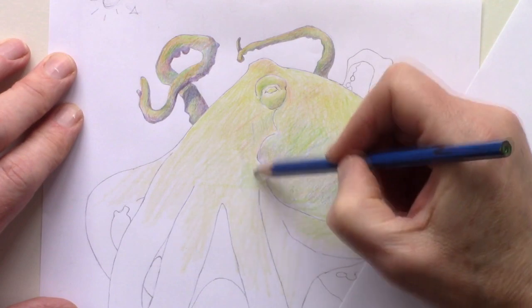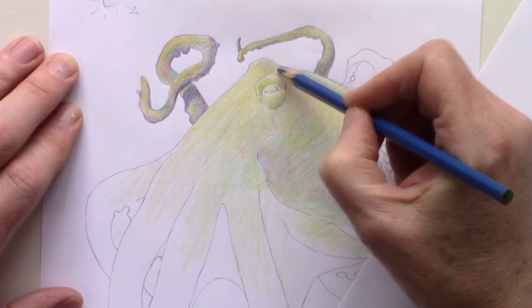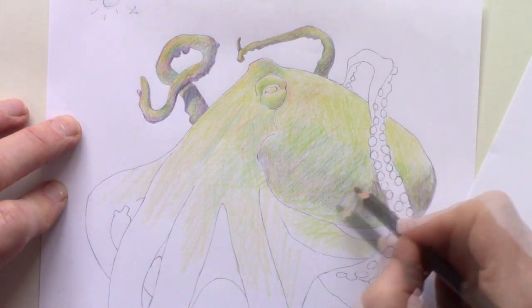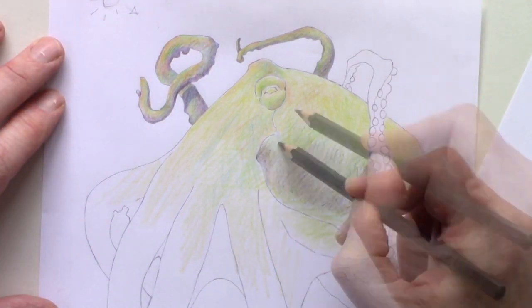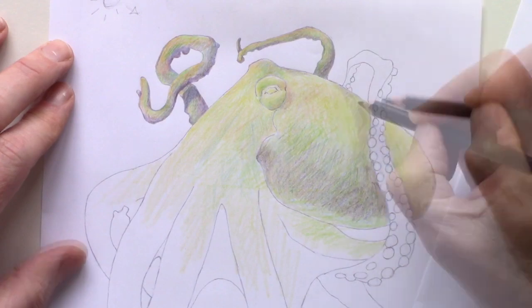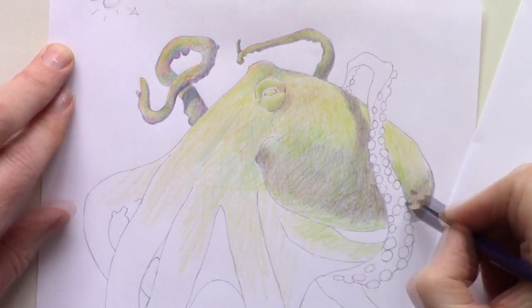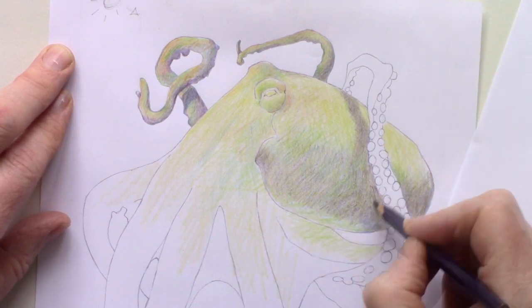And so I use blues and purples to build up the shadows, to create that rounded effect, which gives us depth. I put in a shadow underneath where that tentacle crosses over the head, and you can see how effective that looks.